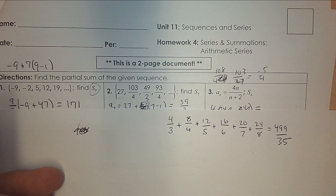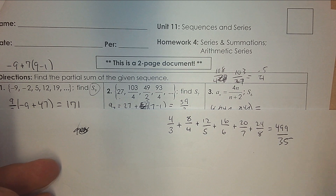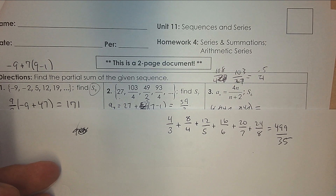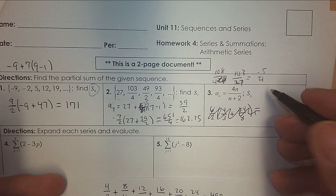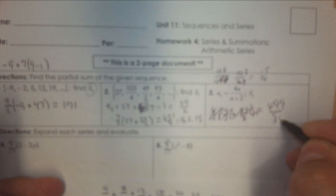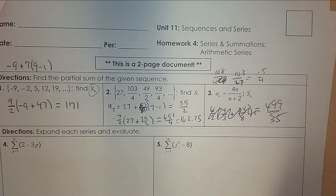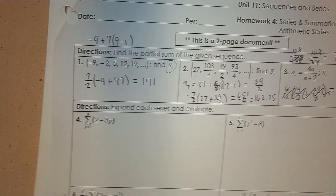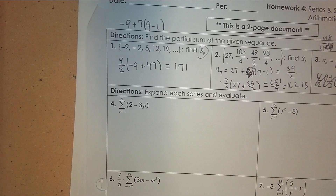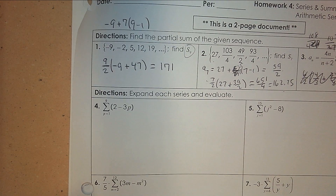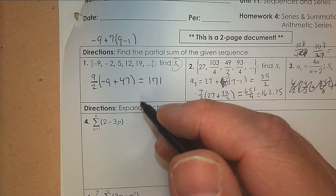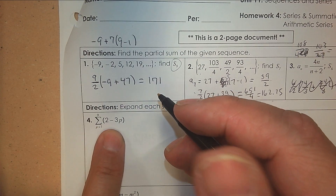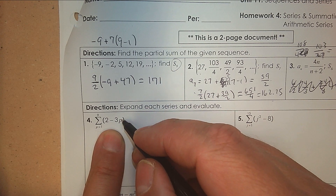So if it's not arithmetic, we can't use that formula. We know it's arithmetic when it's linear. Moving on — this is linear. It's arithmetic because the degree is one.